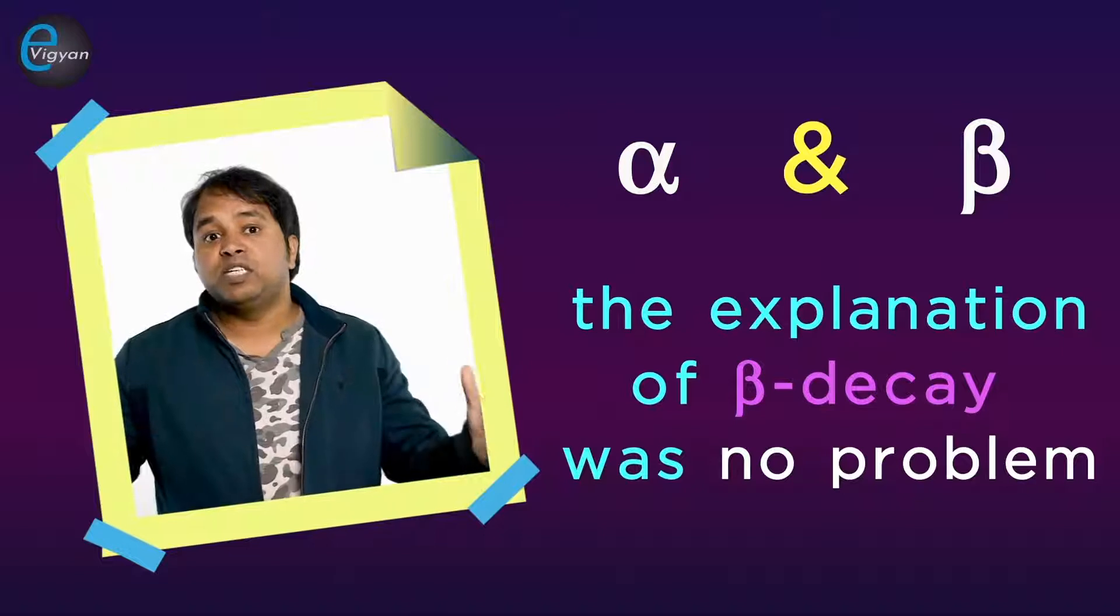It also seemed reasonable that an alpha particle could be formed in the nucleus by the combination of four protons and two electrons.